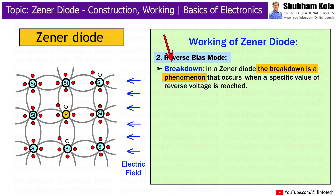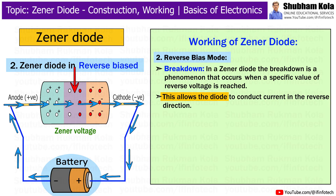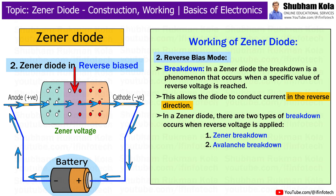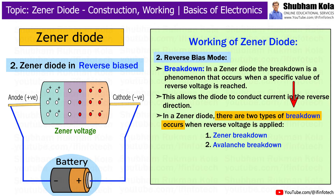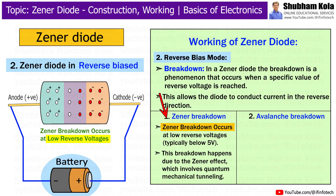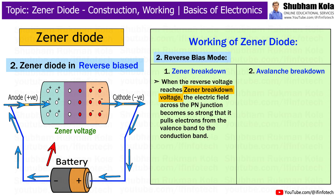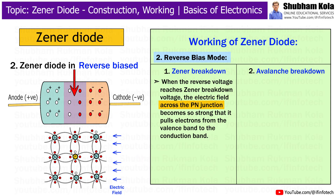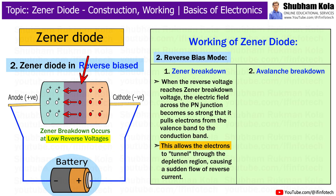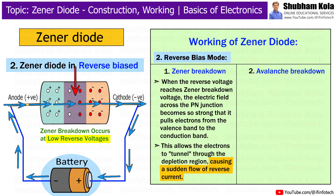In a Zener diode, breakdown is a phenomenon that occurs when a specific value of reverse voltage is reached, allowing the diode to conduct current in the reverse direction. There are two types of breakdowns: Zener breakdown and Avalanche breakdown. Zener breakdown occurs at low reverse voltage, typically below 5V, due to the Zener effect, which involves quantum mechanical tunneling. When the reverse voltage reaches the Zener breakdown voltage, the electric field across the p-n junction becomes so strong that it pulls electrons from the valence band to the conduction band, allowing electrons to tunnel through the depletion region, causing a sudden flow of reverse current.